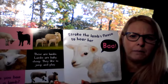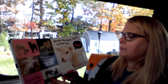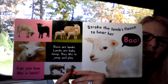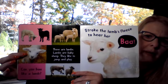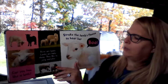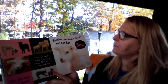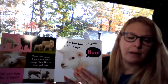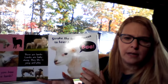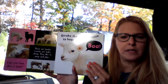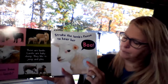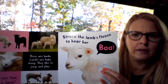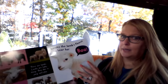These are lambs. Lambs are baby sheep. They like to jump and play. A baby sheep is called a lamb. There's a mama with her babies. Can you baa like a lamb? Stroke the lamb's fleece to hear her. Sheep and lambs don't have fur — they have fleece. It's a little bit different than fur; it kind of feels like a blanket. Did you hear that sound? Baa like a sheep or a lamb.